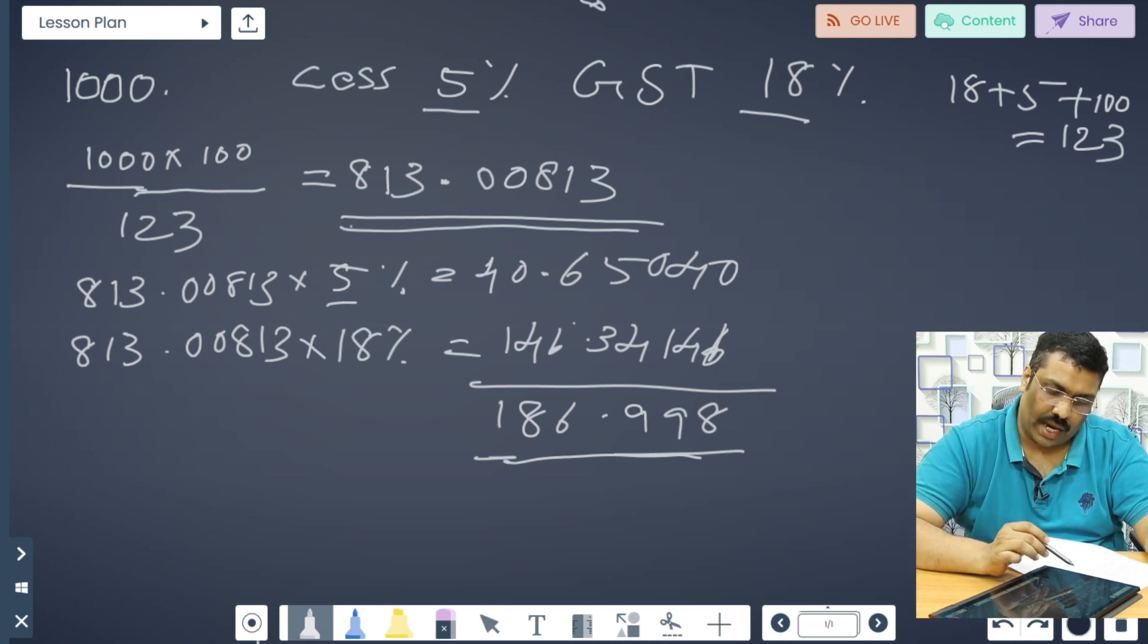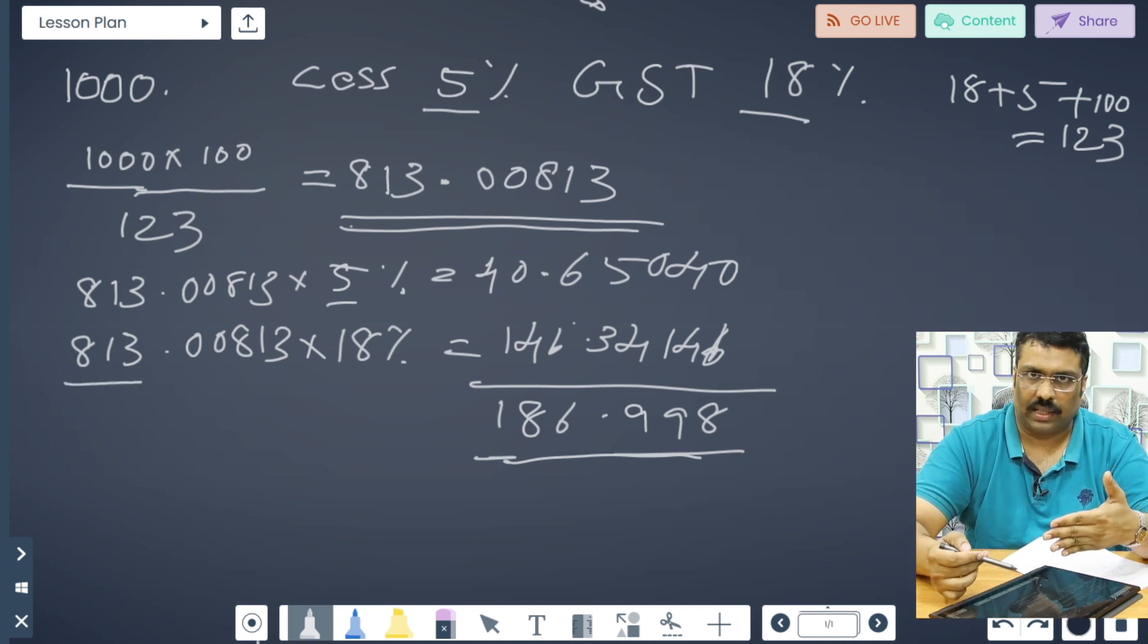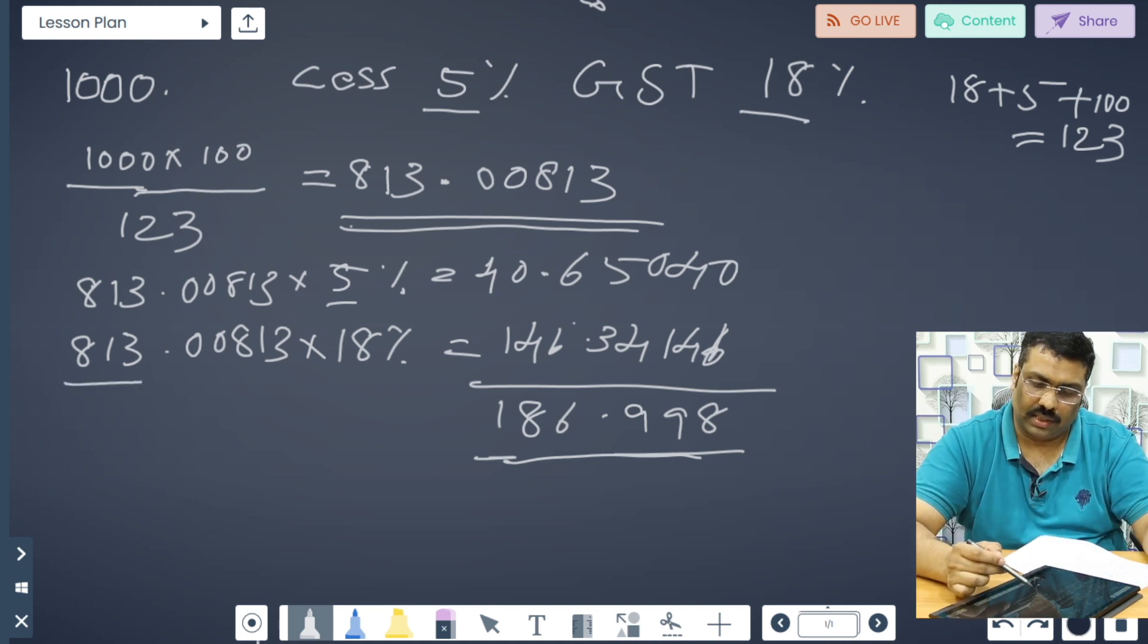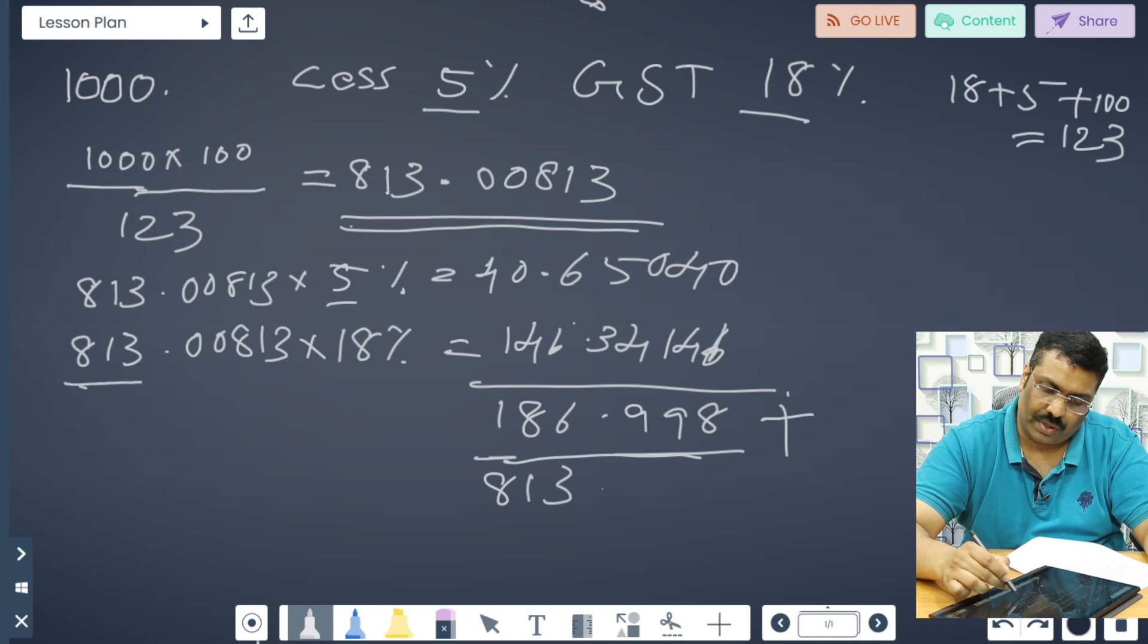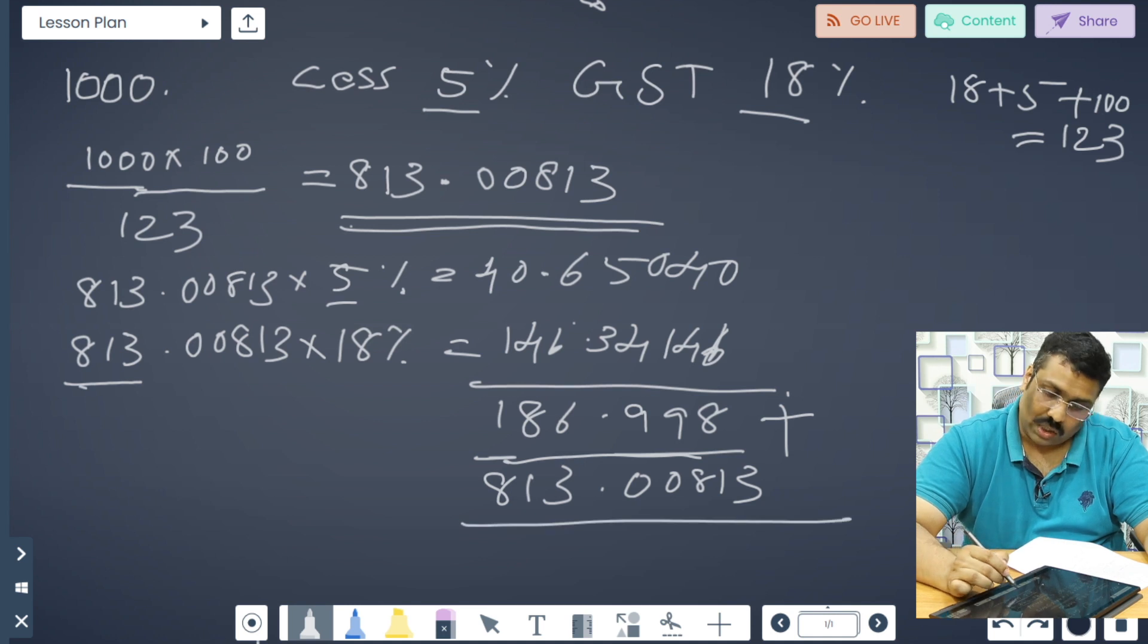So we need to add - this 813 because this is the taxable value, plus these taxes like CGST, SGST, that is total 186. We will add this plus this, so 813.00813, it will be 1000.